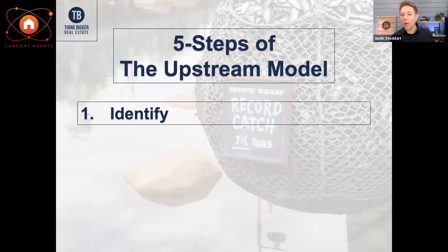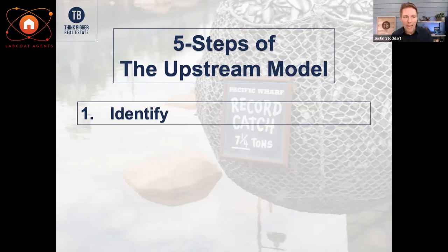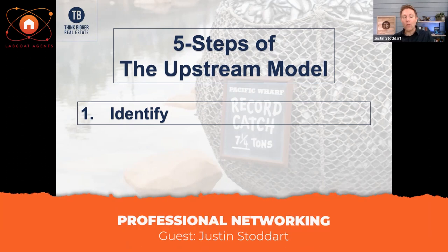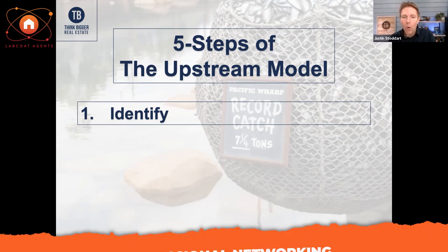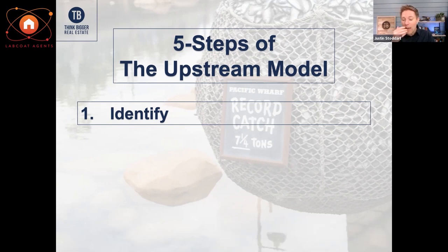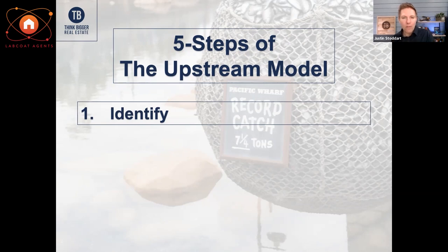Here are the five steps of the Upstream Model. Step one: identify who you actually want to work with. Maybe you don't want to work with divorcees, seniors, or first-time homebuyers — or maybe you do. Look back at your life resume and ask: who am I uniquely positioned to serve based on my previous life experience and who I love to help? Once you've identified that, identify who is the upstream partner — the other professional who already has a relationship with that person.